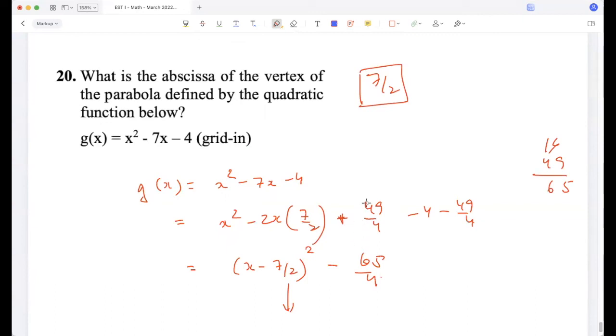So the abscissa, the x-coordinate, would be 7/2. If you don't want to complete the squares, you can also find it using -b/2a. So b is -7, and 2a is 2, right? So that becomes +7/2, right? So you can find it either way.